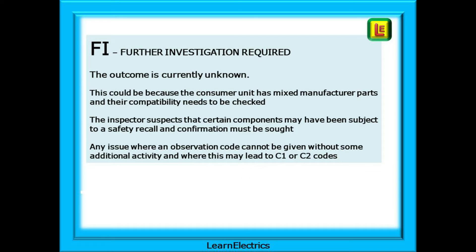And lastly, FI. The inspector has decided that further investigation is required for part of the installation — the outcome for this part of the inspection process is currently unknown. This could be because the consumer unit has mixed manufacturer parts and their compatibility needs to be checked, or the inspector suspects certain components may have been subject to a product safety recall. It is any issue where an observation code cannot be given without some additional activity, and where this may lead to C1 or C2 codes.